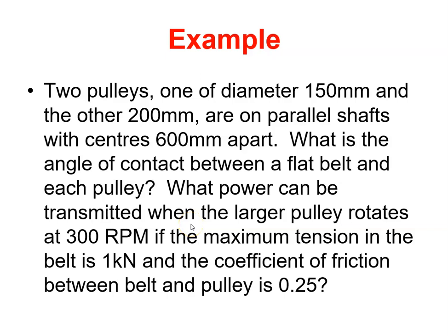Two pulleys, one of diameter 150mm and the other 200mm, are on parallel shafts with centers 600mm apart. What is the angle of contact between a flat belt and each pulley? What power can be transmitted when the larger pulley rotates at 300 revs per minute if the maximum tension in the belt is 1 kN and the coefficient of friction between belt and pulley is 0.25?